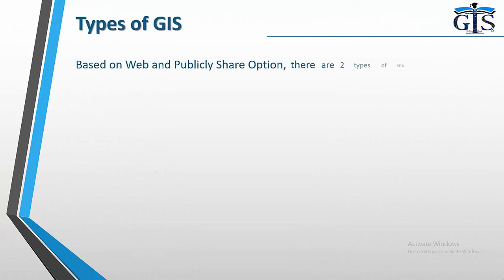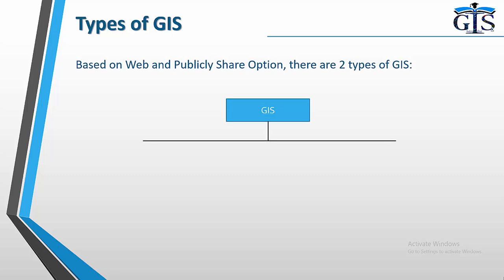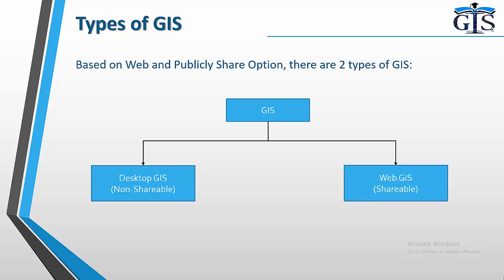Now let's see the types of GIS. Based on web and publicly share options, there are two types of GIS. One is desktop GIS, which is non-shareable. Another one is web GIS, which is shareable by using the web and internet.